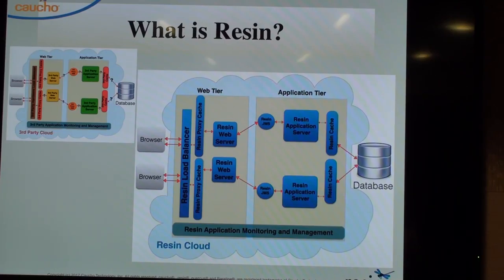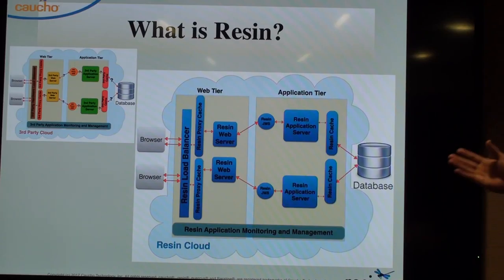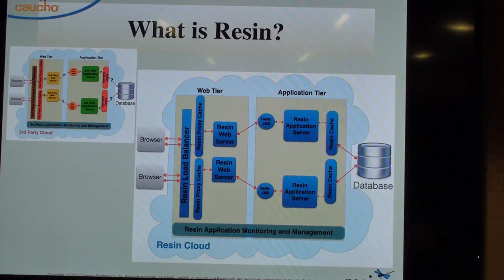Resin was the first actual Java EE Web Profile Certified Application Server. We looked at the JSRs that developers were really using and needed. Scott Ferguson made the decision to implement those JSRs for running a Java web application. Before microservices buzzwords came about, Caucho was paving the way. The things Resin does include: a software load balancer, proxy cache, web server, Resin JMS, an app server, distributed cache, and integrated application monitoring and management.